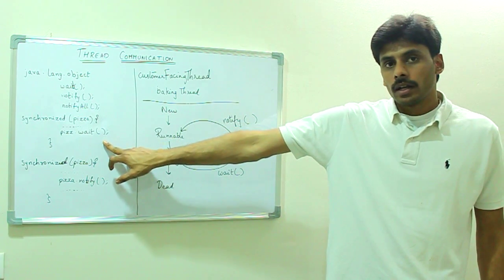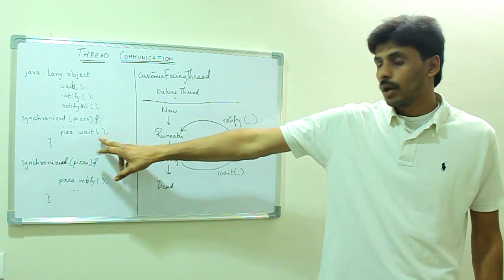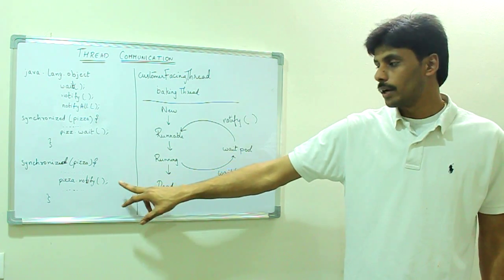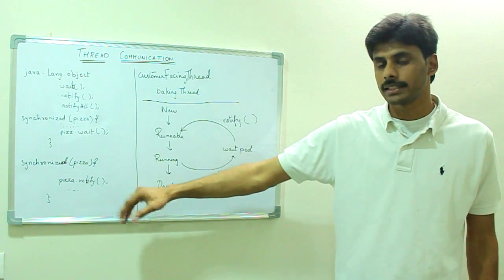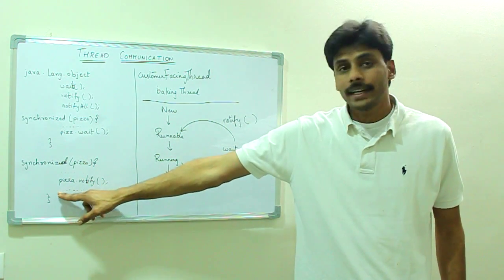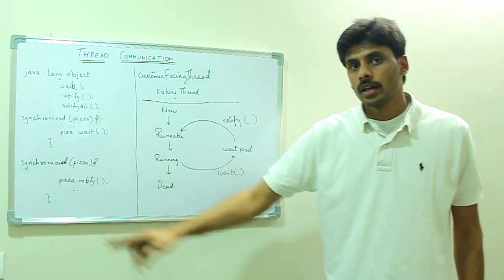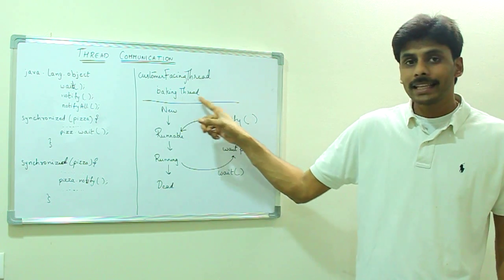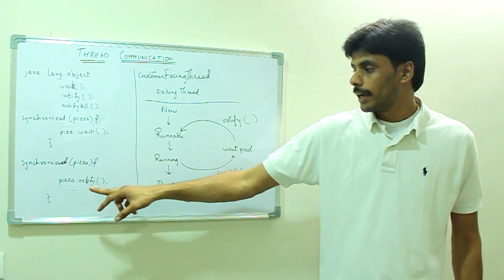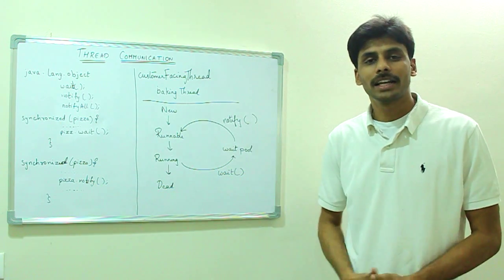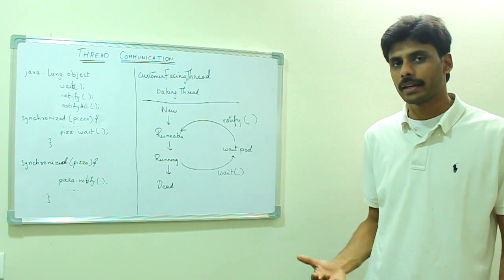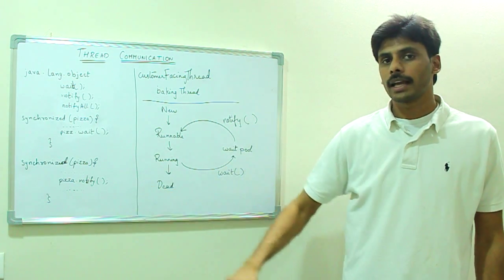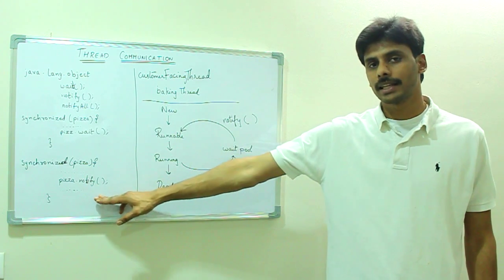When the wait method is called, that thread will right away give away the lock and go to the waiting pool, but it's not the case with the notify method. When the notify method is called from a synchronized block, that thread will still run until the end of the synchronized method and then it gives the lock away. Going back to our example, when the baking thread is having the lock on the pizza object, it can do some cleanup work — it can clean up the oven before it hands over the lock back. So in the case of wait, the lock is given right away, but in the case of notify, it will take a little bit depending on the code you have within the synchronized block.